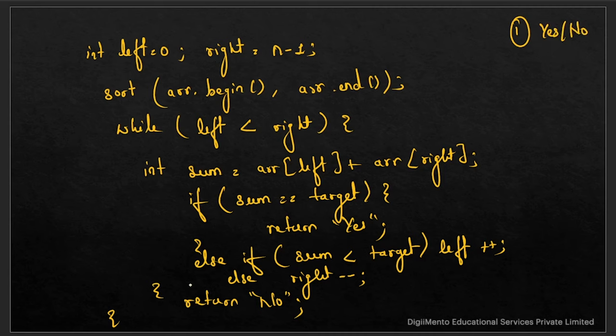However, can this greedy two-pointer approach solve the index problem? No, it cannot. Because we sorted the array, the original indexes are lost. That is the limitation of this approach. For finding indexes, hashing is the only best and optimal solution. But for the yes/no problem, the two-pointer approach is more optimal.